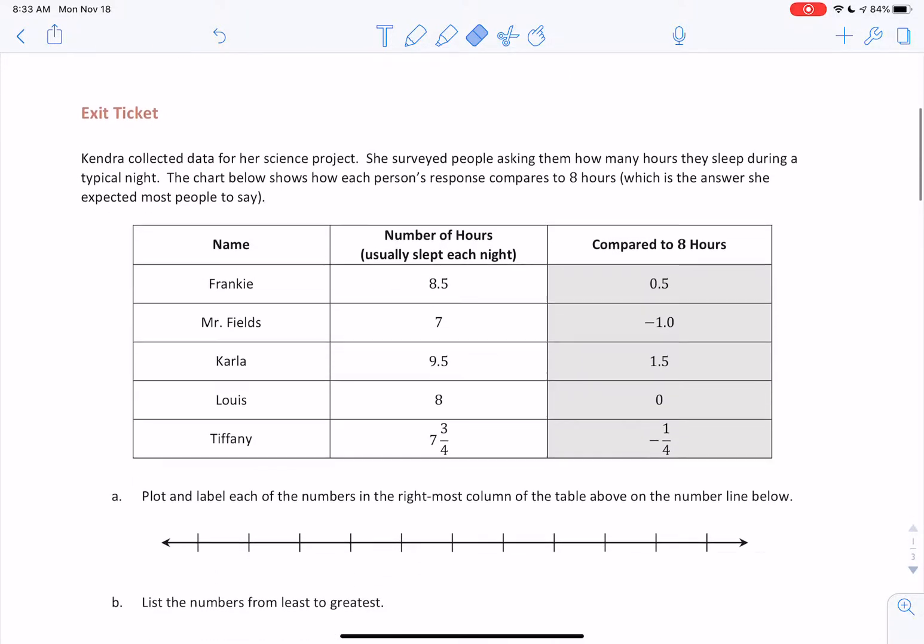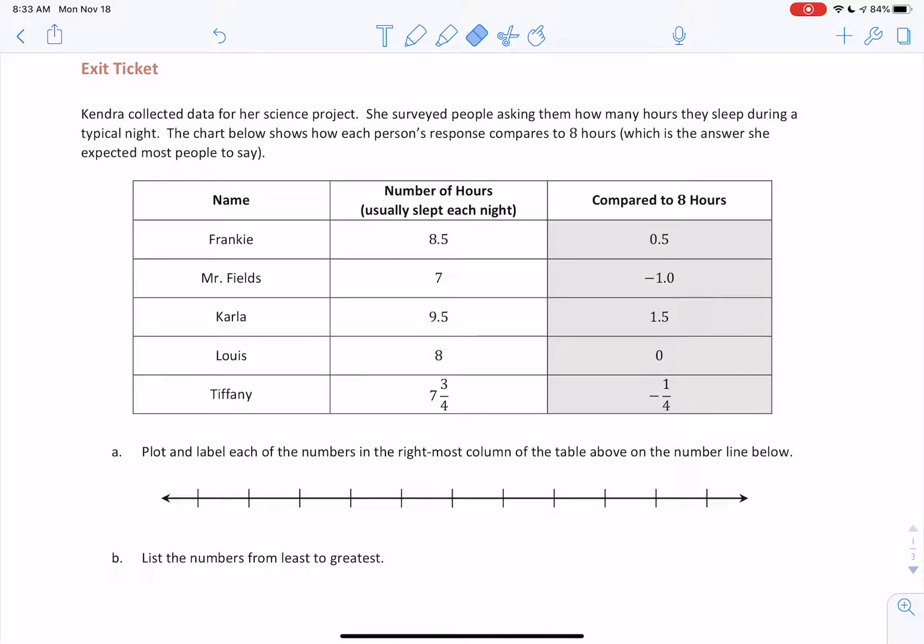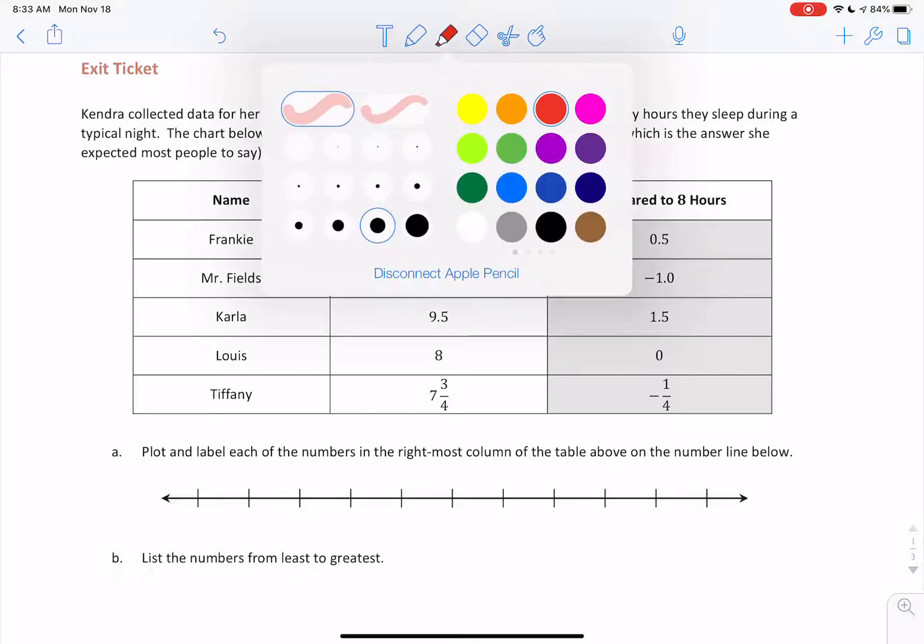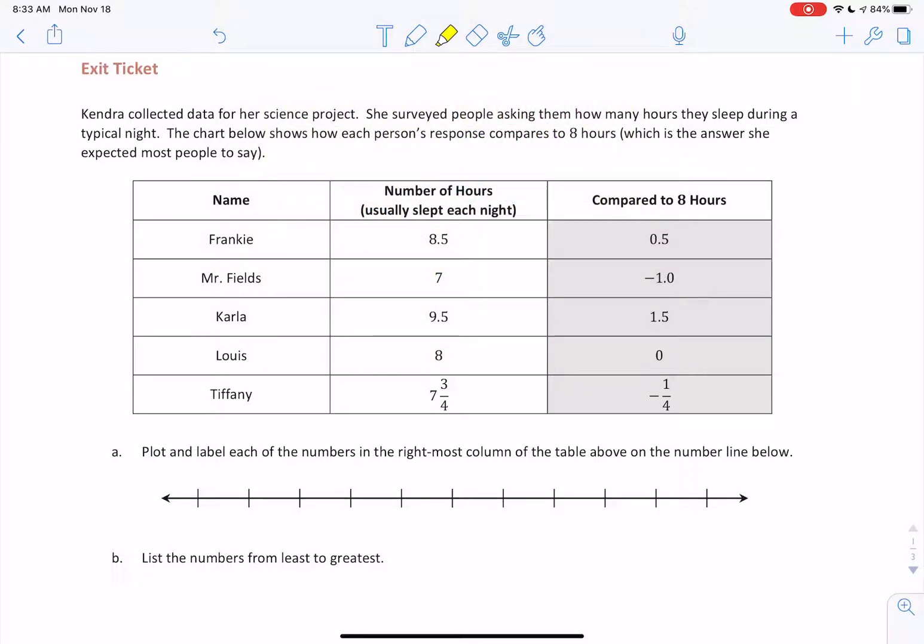Here we have a collection of data referring to the amount of hours that different people sleep every night. In the rightmost column, we can see that they compare the hours of sleep that each individual gets to 8 hours. Some of them sleep more than 8 hours, some of them sleep less than 8 hours.